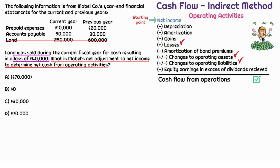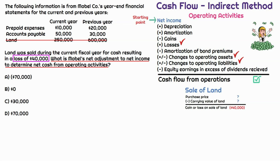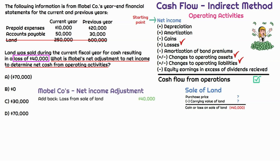Starting with the sale of land — there was a $40,000 loss. How would that loss be calculated? We take the purchase price, which is what the buyer pays Mabel, and subtract the carrying value of the land to get our loss. The only cash flow impact here would be the actual purchase price — the cash Mabel receives — but that goes in the investing section. All we need to do is reverse that loss so there's no impact to the operating section, since Mabel doesn't actively engage in the sale of land as a recurring activity. So we put plus $40,000 in our net adjustment to reverse that loss.